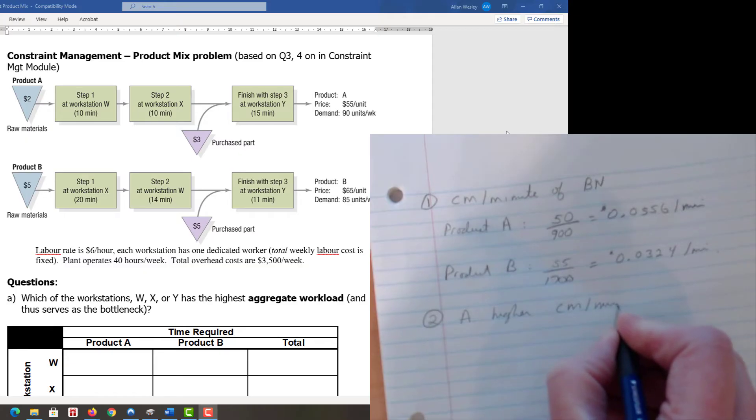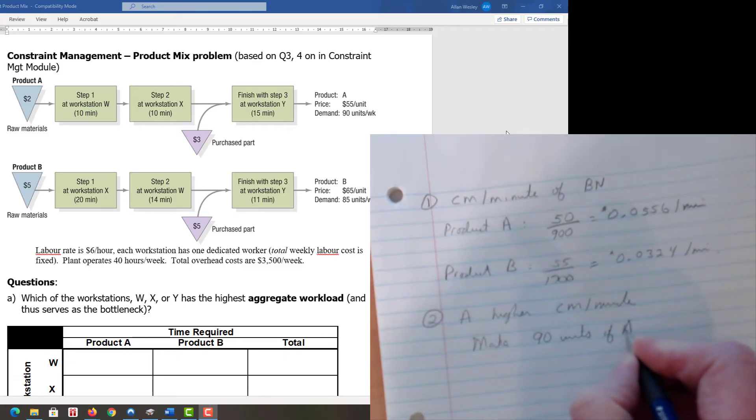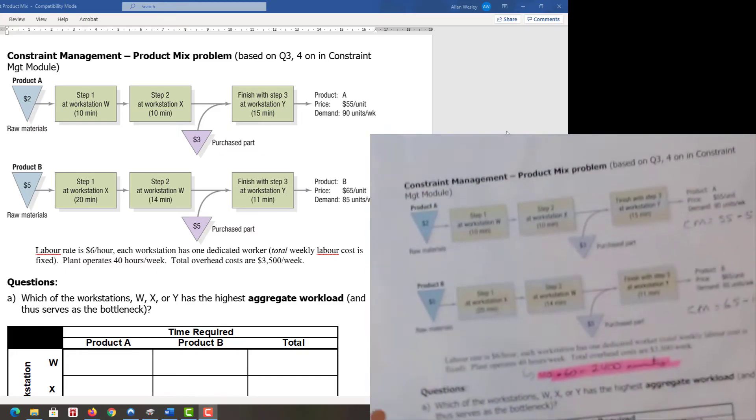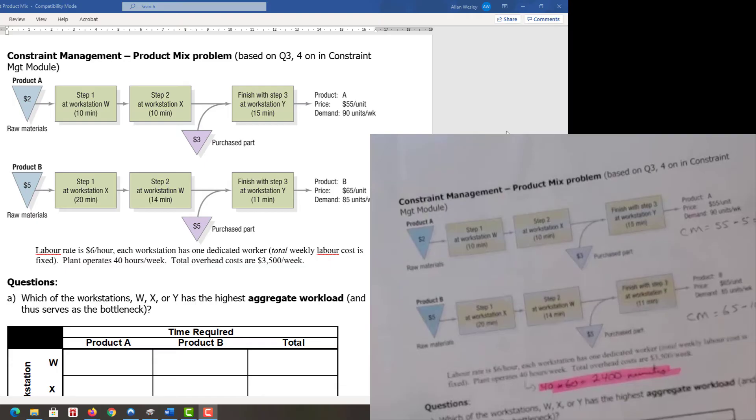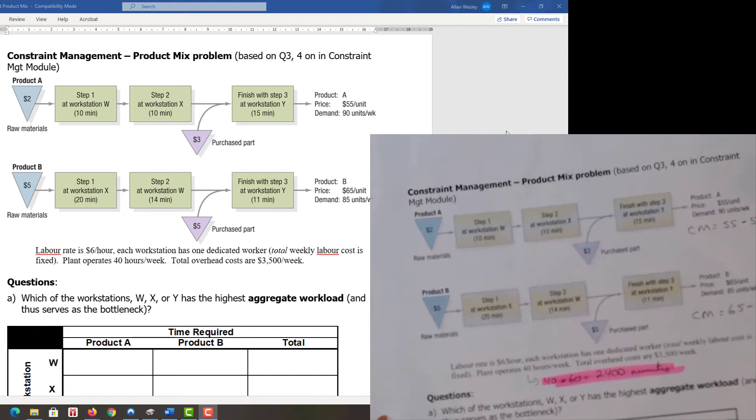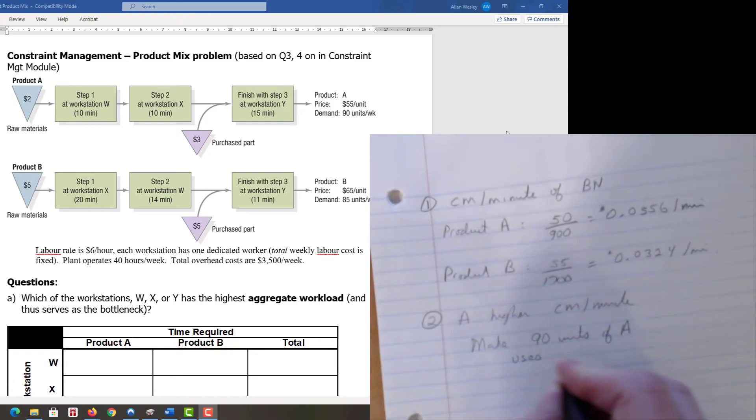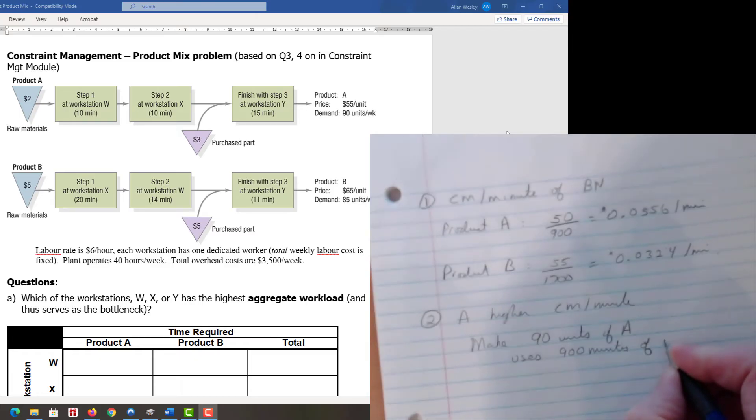A has the higher contribution margin per minute, so we want to make as much A as we can. We're going to make 90 units of A. When we make 90 units of A, we already know that will consume 900 minutes of workstation X time.